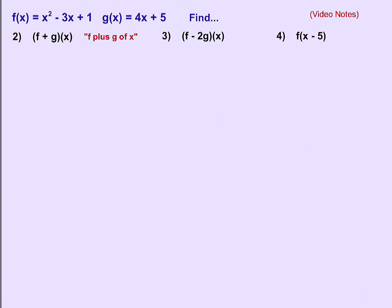Addition is an example of one of the basic operations that we do all the time. So adding them together is just like adding anything else. What we would do is write x² - 3x + 1 plus 4x + 5, and that's how we add two functions together.